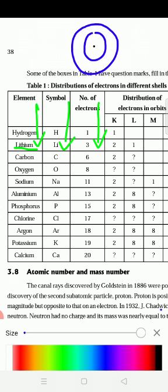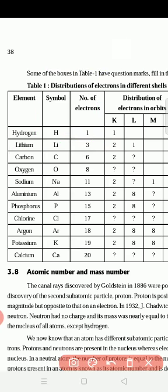So in the K shell — as I have explained, always in the first shell only two electrons should be distributed. So K shell has two. Now if you keep two, how many are remaining? One. So we keep one in the L shell. In the L shell: one. In the K shell: two. Total number of electrons: three.